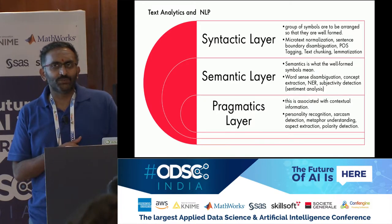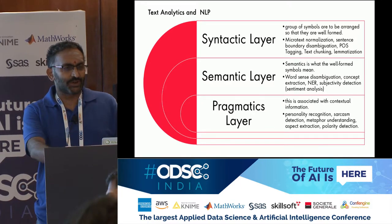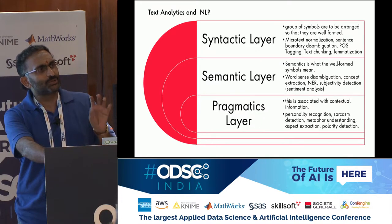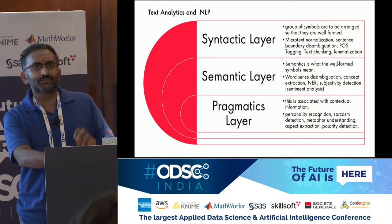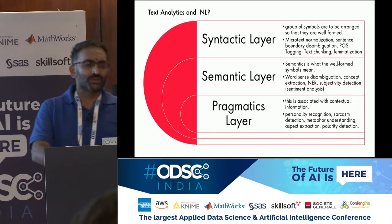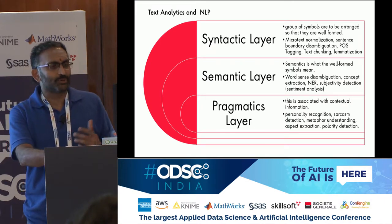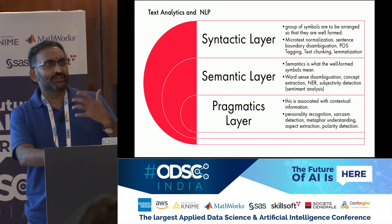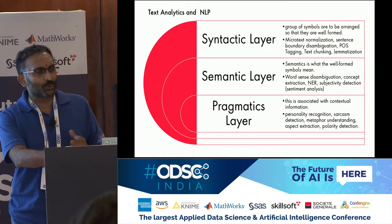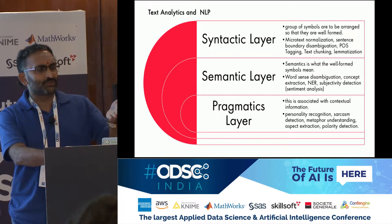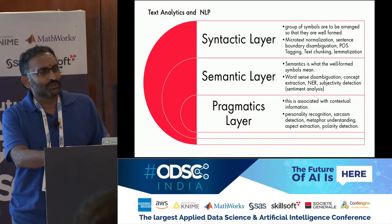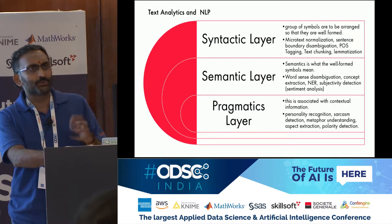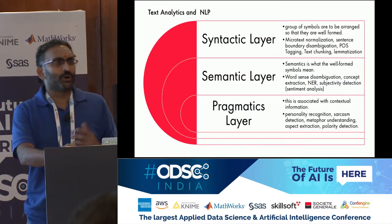The idea is to give a quick view of the history of NLP and the approaches that have been tried. There are three broad layers: the syntactic layer, which deals with text as just symbols, handling simpler problems like POS tagging or text chunking. The semantic layer is when you start understanding the meaning of text, solving more sophisticated problems like NER. And the pragmatics layer is probably the most sophisticated, where you look at contextual information and perform very complex tasks.